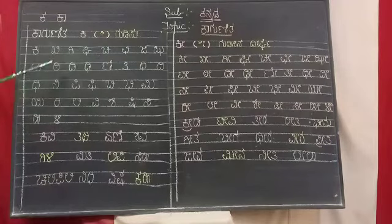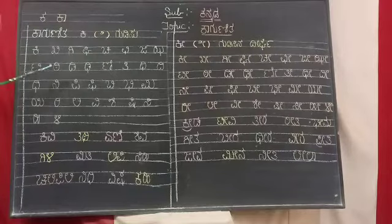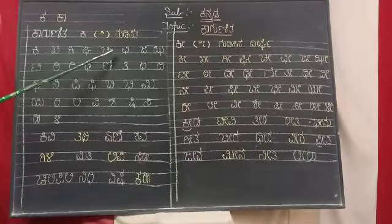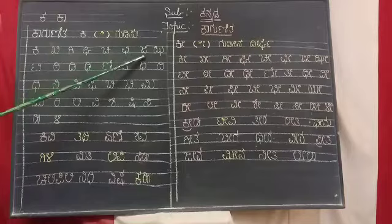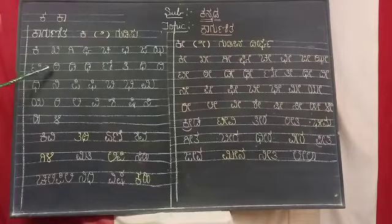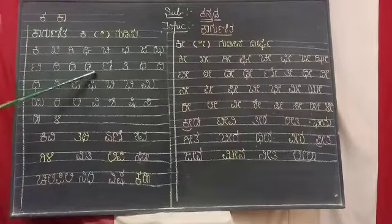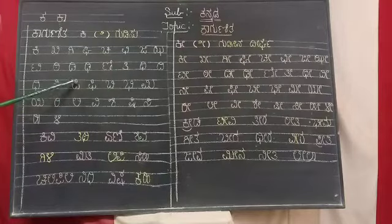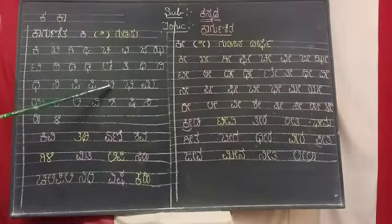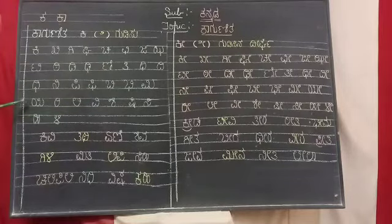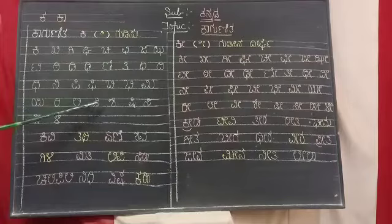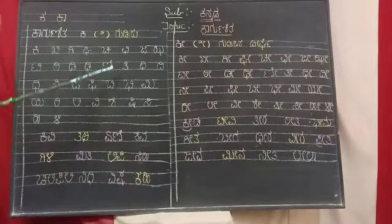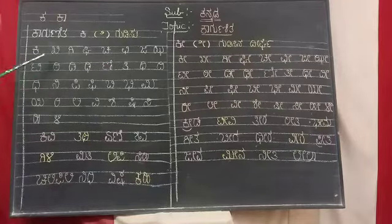Kartula: Ki, Khi, Gi, Ghi, Chi, Chhi, Ji, Jhi, Ti, Thi, Di, Dhi, Ni, Ti, Thi, Di, Dhi, Ni, Pi, Phi, Bi, Bhi, Mi, Yi, Ri, Li, Vi, She, Shi, Si, Hi, Li. This is the way you have to read the Gudisu Ki or Khi Khatula.